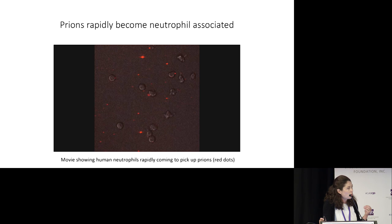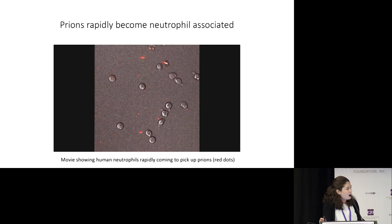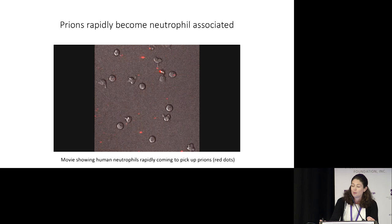Now, what are the neutrophils actually doing with these prions? In this movie, the prions are the red dots. Neutrophils are highly mobile cells, consistent with their ability to come and deal with infection. You can see them moving through the dish, and they come and grab those red prion particles.